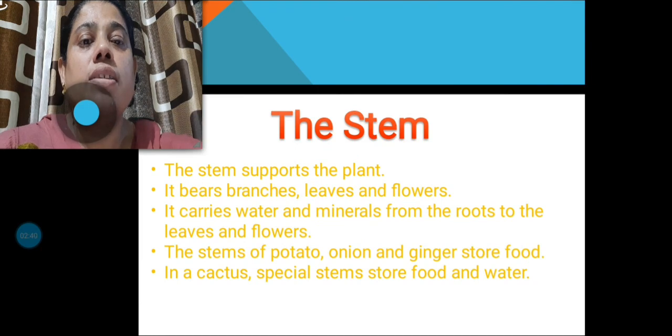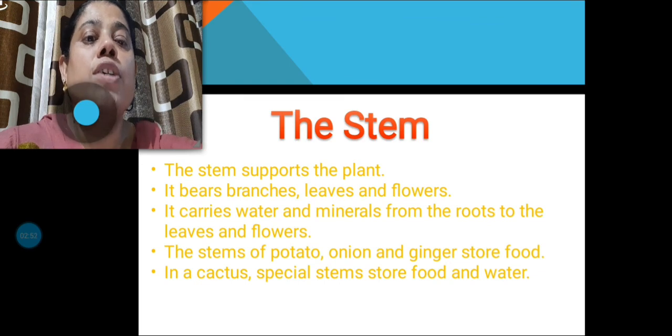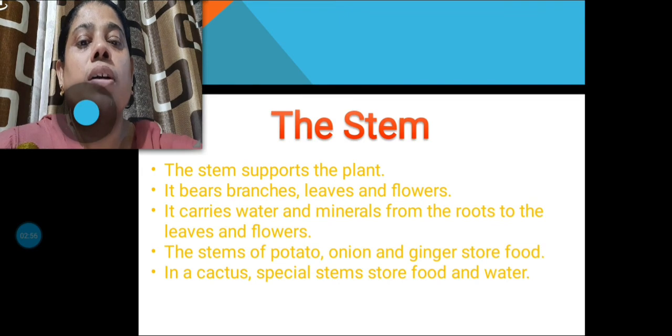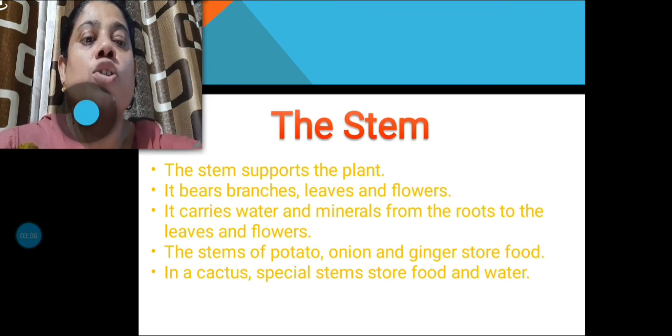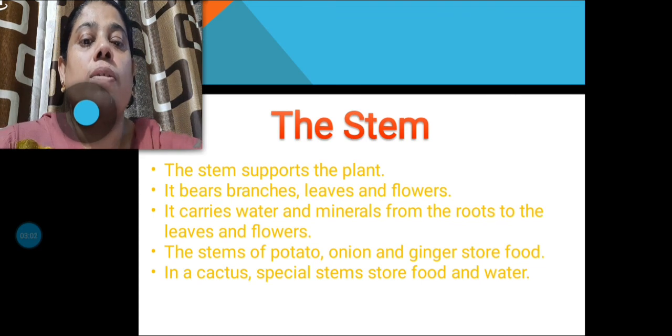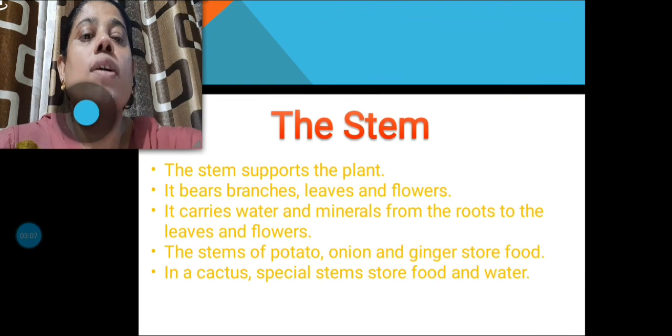Next is the stem. The stem supports the plant. It bears branches, leaves and flowers. It carries water and minerals from the roots to the leaves and flowers. The stems of potato, onion and ginger store food. In a cactus, special stems store food and water.